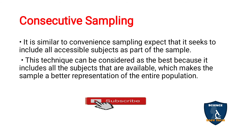Consecutive sampling is similar to convenience sampling, except it seeks to include all accessible subjects as part of the sample. This technique can be considered the best among non-probability methods because it involves all available subjects, making the sample a better representation of the entire population. For example, if you are sampling from a particular locality, you take whoever is in that area consecutively — the next house, the next neighbor — whoever is in that locality.